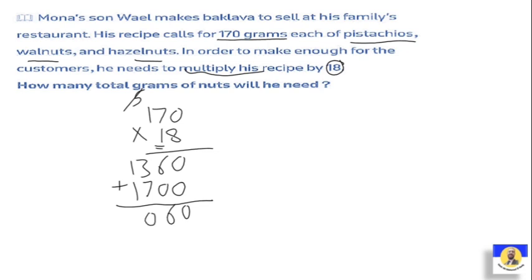So Wail makes baklava to sell at his family's restaurant. His recipe calls for 170 grams each of pistachios, walnuts, and mixed nuts. To make enough for customers he multiplies by 18. We calculated 170 multiplied by 18, giving us the answer of 3,060.